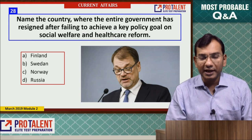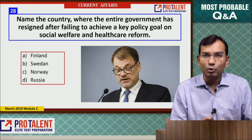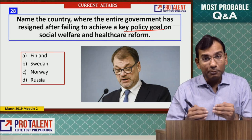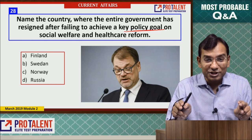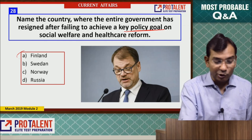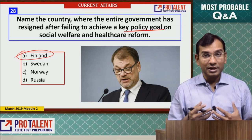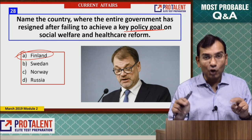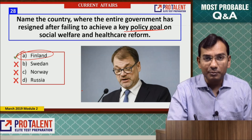Question 28: Name the country where the entire government resigned after failing to achieve key policy goals on social welfare and healthcare reform. The full government resigned because they couldn't meet certain policy goals. The country is Finland — a positive example of politicians taking responsibility for not performing their duties.